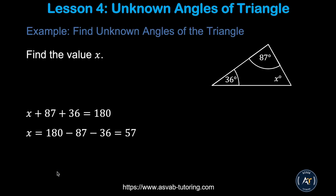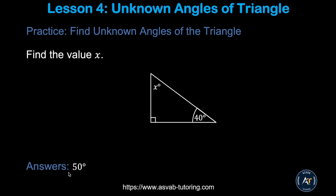Now we'll learn how to find the missing angle of a triangle. A triangle's angles sum to 180 degrees. If one angle is 36 and another is 87, you add those two and subtract from 180 to get X equals 57 degrees. For a practice problem, pause the video and try by yourself — note that a small square symbol indicates a right angle of 90 degrees. Make sure you get 50.